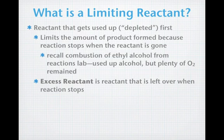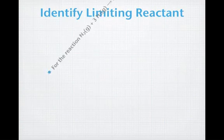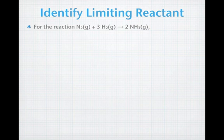Now, let's take a look at how limiting reactants work. In order to identify the limiting reactant, you've got to follow a process. So, let's look at the process for the reaction of nitrogen gas plus 3 hydrogen gas forming 2 ammonia.